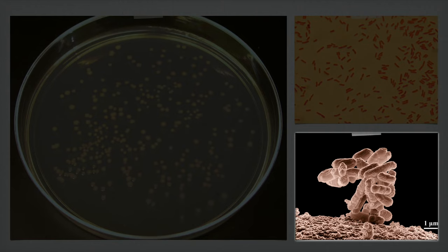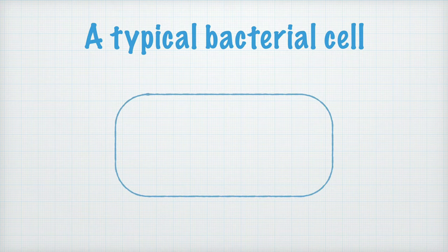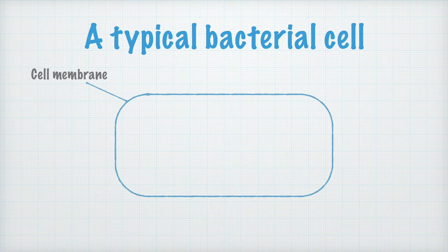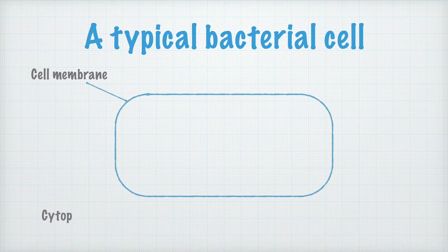Now let's write some notes about this too. This is how I usually draw a typical bacterial cell — a somewhat rounded rectangle like this. The bacterium is enclosed by a cell membrane. Cell membranes mainly consist of phospholipids, but there are also a lot of proteins lodged in the cell membrane. These proteins regulate what may enter and exit the cell, among other things. Inside the cell membrane, in the cell, we find the cytoplasm.